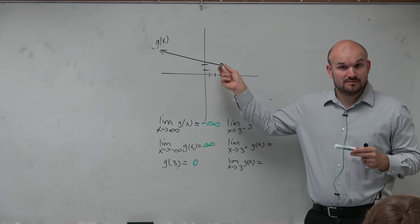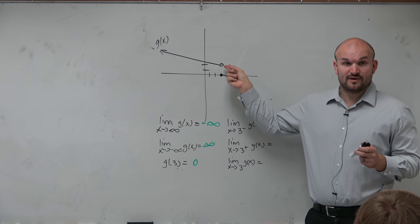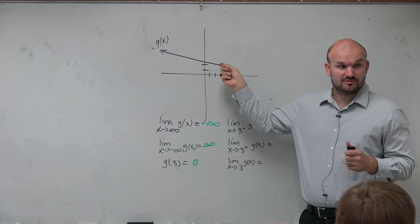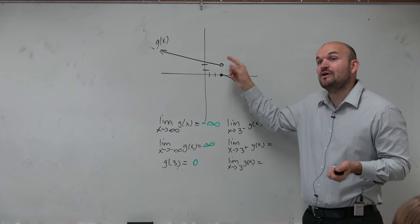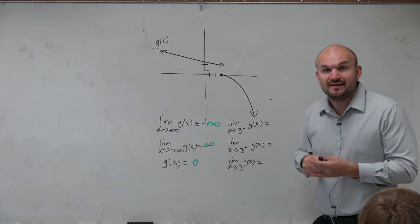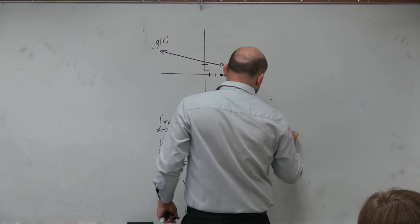Is it defined at 2? No, there's a hole there, right? It's not even defined at 2. Or I'm sorry, it's not defined up there. 2 is not a value of the graph, but that's what it's approaching. And that's what the question is asking. What are we approaching?